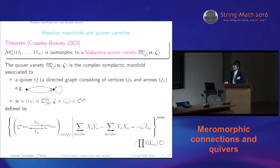N is a tuple of non-negative integers indexed by vertices. And zeta, which is a tuple of complex numbers indexed by vertices. So to define it, consider for each arrow two vector spaces of dimension given by N. So here S of A is the source of the arrow A, and T of A is the target. So we have two vector spaces. And then consider the linear maps in both directions.